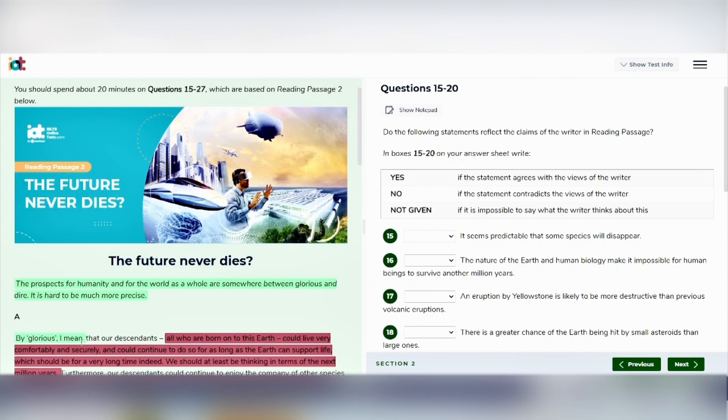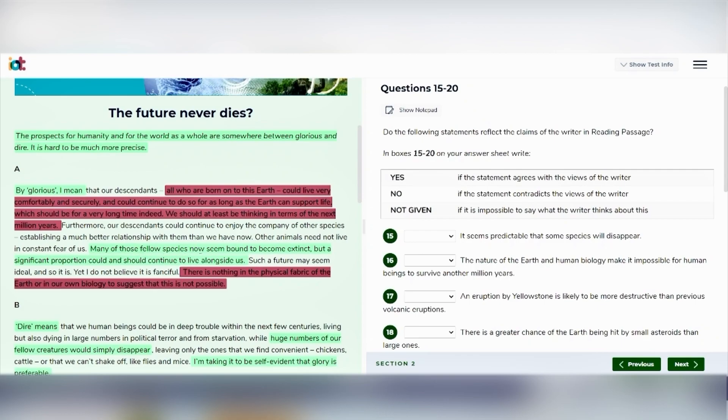By glorious I mean, many of those fellow species now seem bound to become extinct, but a significant proportion could and should continue to live alongside us. If we move on to the next paragraph, it says that dire means that a huge number of our fellow creatures would simply disappear. So the writer says in the first line that the future of humanity is somewhere between glorious and dire. And in the first paragraph, it is explaining that by glorious, it means that some species will disappear. However, in B paragraph, it says that a huge number of species will disappear. So how will we decide?